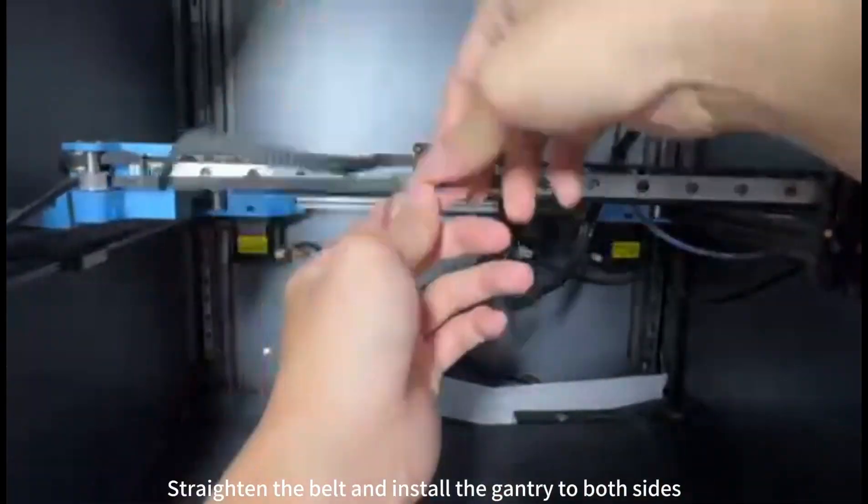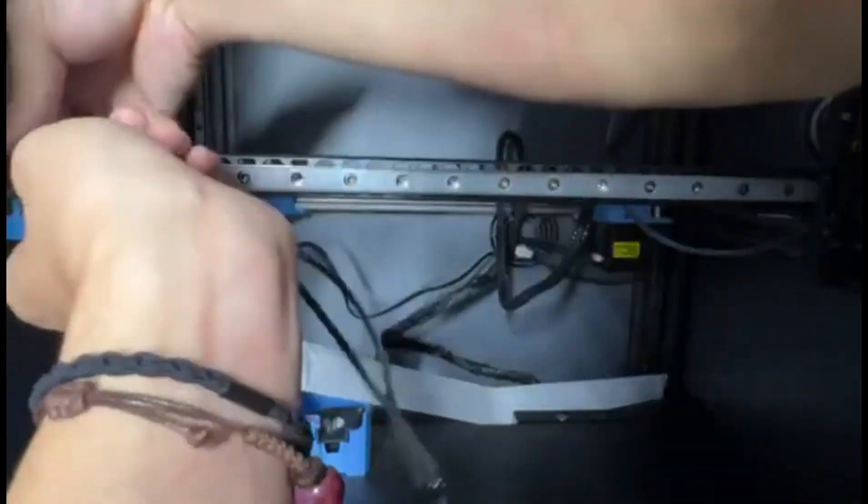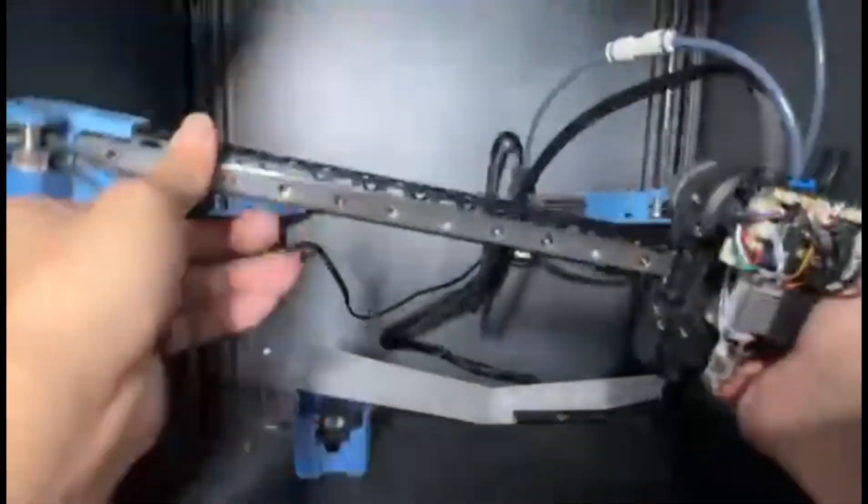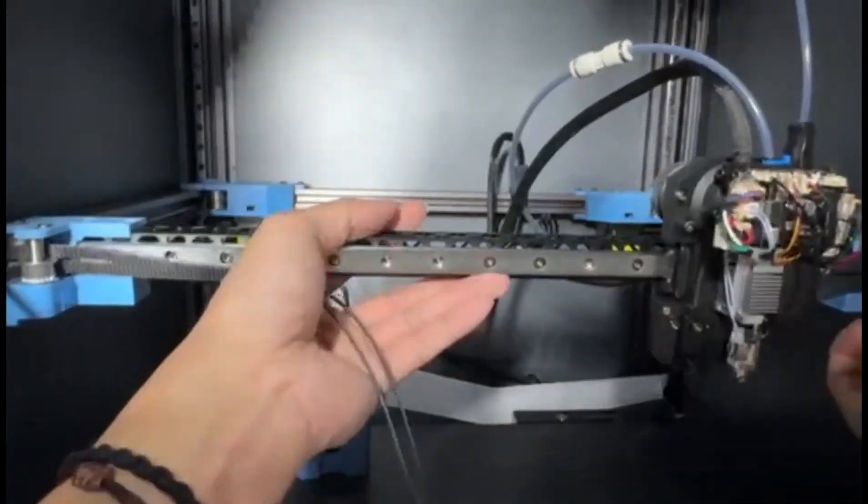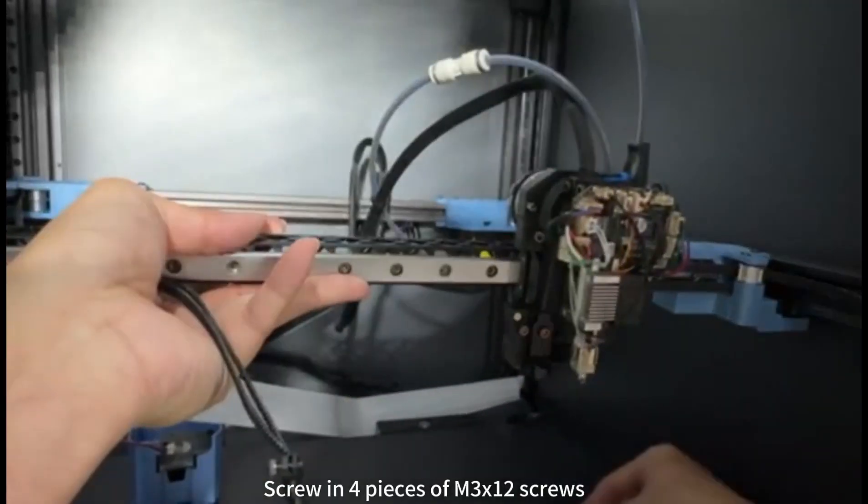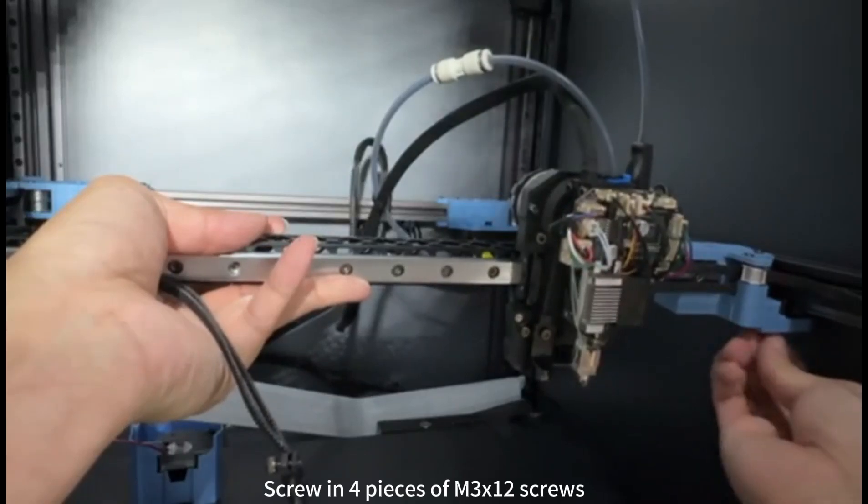Straighten the belt and install the gantry to both sides. Screw in four pieces of M3 by 12 screws.